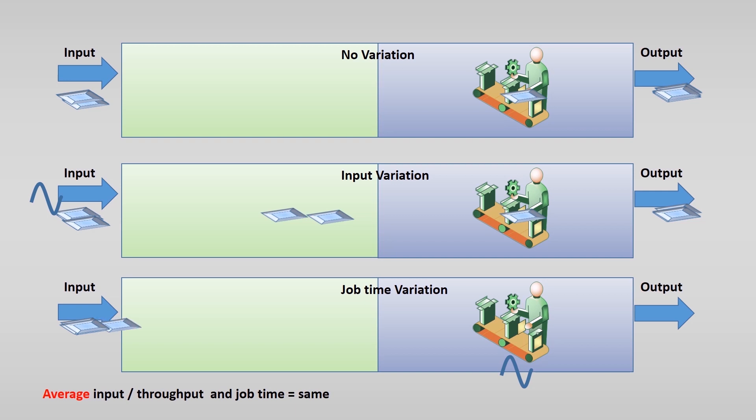If the input is stable but the job time varies, you see the same effect. You cannot make up for the lost time of a process that takes a little longer. And if you are quicker, there is not always a product waiting to be processed.